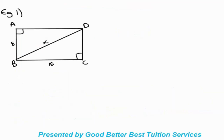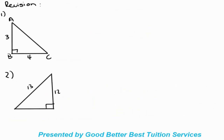To refresh your memory on the theorem of Pythagoras, we're going to look at some simple examples before moving on to more complicated ones. Straight away, we can see we're given a right angle triangle, clearly shown by the right angle symbol inside. They give us the sizes of two of the sides, and the side they don't give us is our hypotenuse.